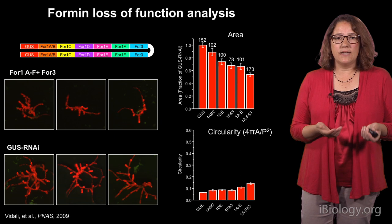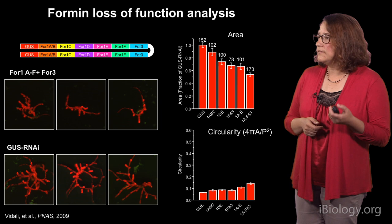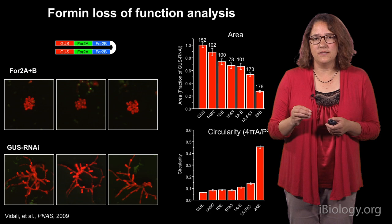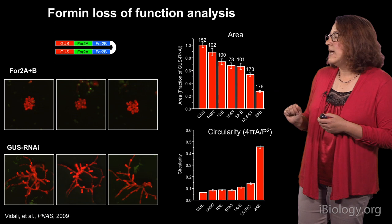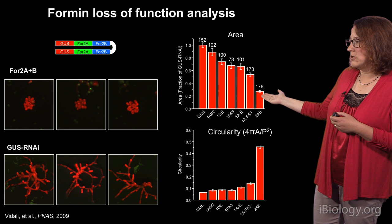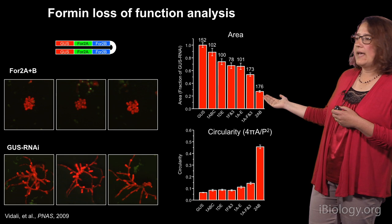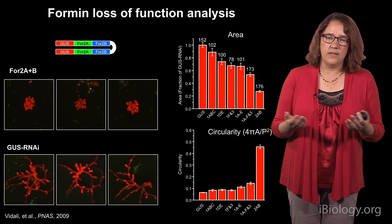What about the class 2 formins? They have the different N-terminus with the P10 domain, and there are only two of them. We put both on the same construct because they're very similar to each other. And lo and behold, we got an amazing phenotype. Get rid of all the class 2 formins and you have very small plants composed of spherical cells. These are absolutely essential for cell polarity, because this is exactly the same phenotype we get if we eliminate the actin cytoskeleton. The area is very small compared to the control, and the circularity has gone through the roof. Class 2 formins in Fiscomatrella patents are essential for cell polarity.